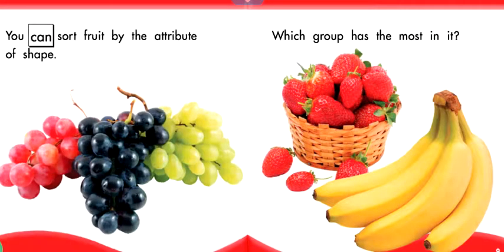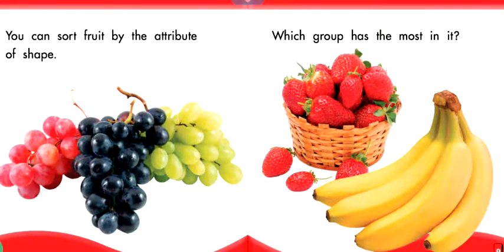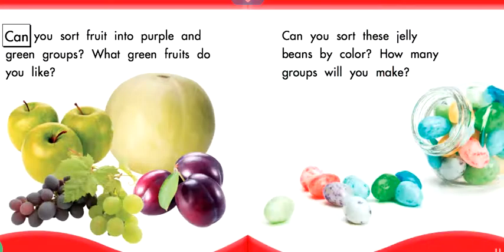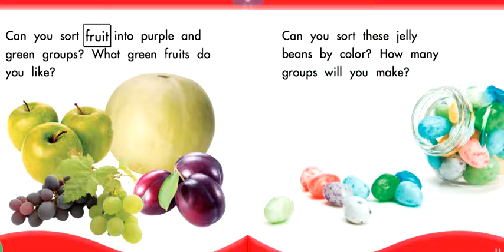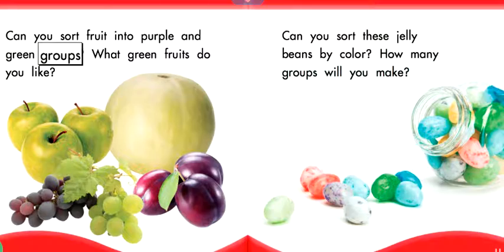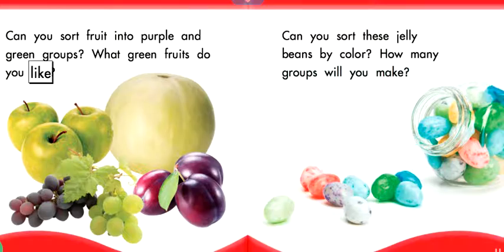You can sort fruit by the attribute of shape. Which group has the most in it? Can you sort fruit into purple and green groups? What green fruits do you like?